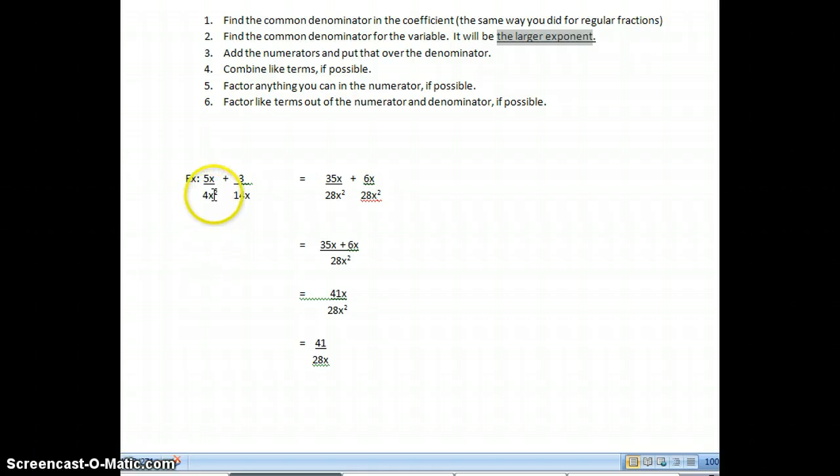Now what I'm going to do is, to find my new numerator, I do 4 into 28 goes 7 times, 7 times 5 is 35. That part you can get pretty good. Now x squared into x squared goes one time, 1 times x gives me x. So you can see I've got, when I'm comparing these two, I have x over x squared, I have x over x squared. So the difference between the bottom and the top are the same for both of these fractions.